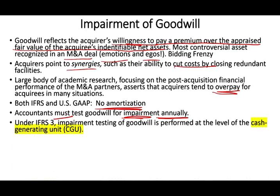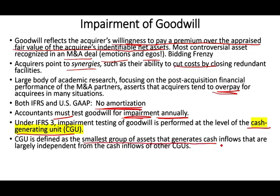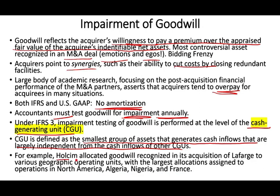Under IFRS 3, impairment testing of goodwill is performed at the level of the cash-generating unit (CGU) — defined as the smallest group of assets that generate cash inflows largely independent from other units. For example, Holcim allocated goodwill from the Lafarge acquisition to various geographical CGUs: North America, Algeria, Nigeria, and France — since Lafarge was a French company with main operations there.